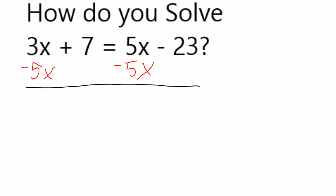And that's going to leave me with 3x minus 5x is going to be negative 2x. Then I have the plus 7. That didn't change. And that's going to be equal to just negative 23 because the 5x and the minus 5x cancelled. Now I can solve this as a two-step equation.